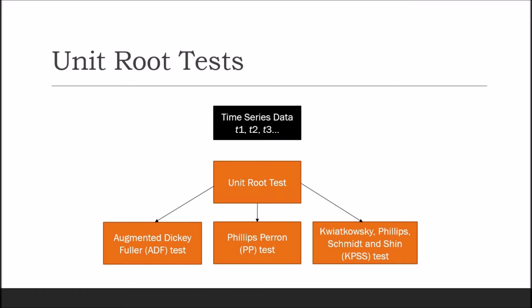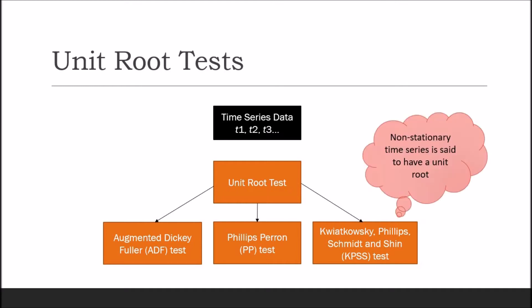In the KPSS test, the null hypothesis is stationarity and the alternative hypothesis is non-stationarity. A non-stationary time series is said to have a unit root. I recommend using one parametric and one non-parametric test to make a comparison of results for your time series data.